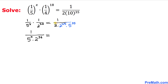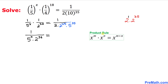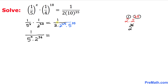Let's focus on this part: 2 times 2 power 35. We write 2 as 2 power 1, then apply the product rule — when multiplying, we add the exponents. So 2 power 1 plus 35 equals 2 power 36. Therefore on the right hand side, the fraction becomes 1 divided by 2 power 36 times 5 power 35.